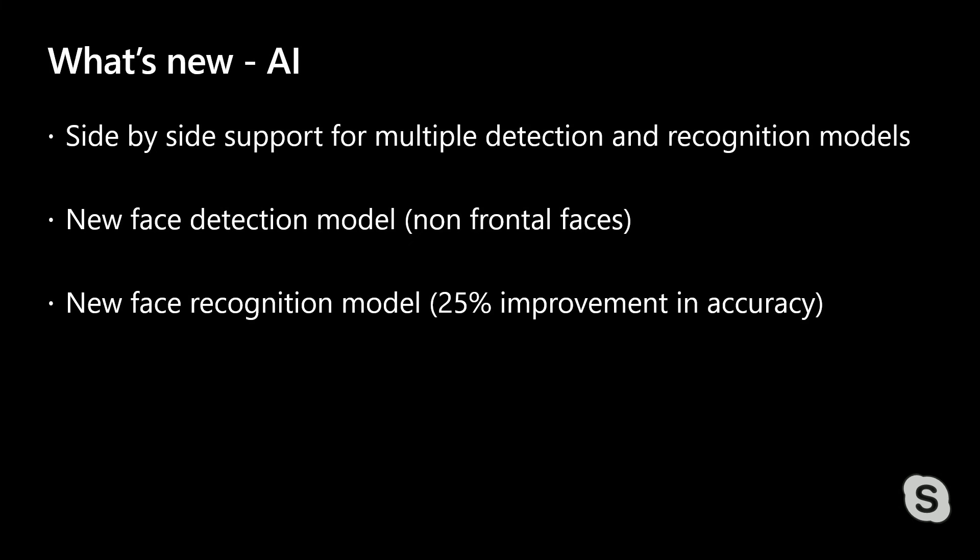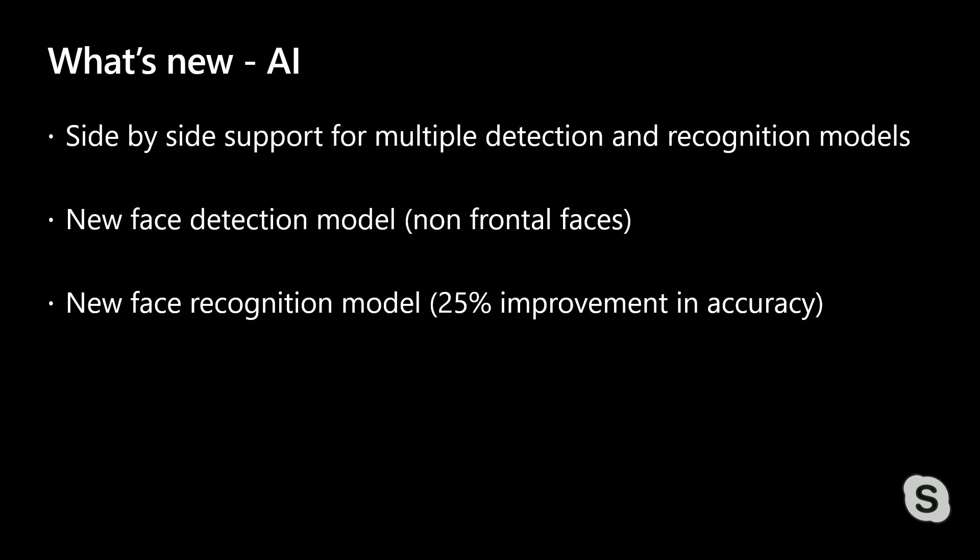Let me recap. Side-by-side support means if you're using a previous model it will still work, but you can move to the next model when you're ready and you're in control of when you do it. We have a new face detection model for non-frontal faces, which is a hard problem, and it enables a new class of applications for counting, blurring, or other scenarios where all faces in an image need to be understood.